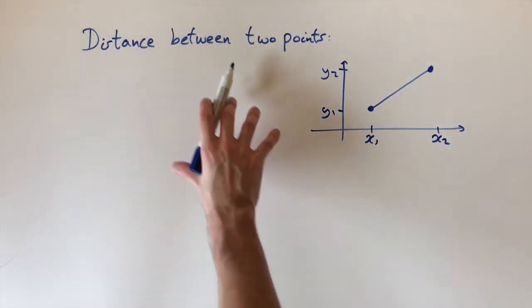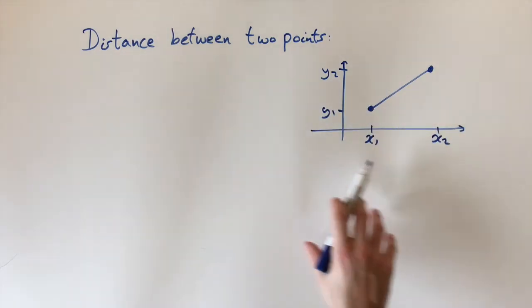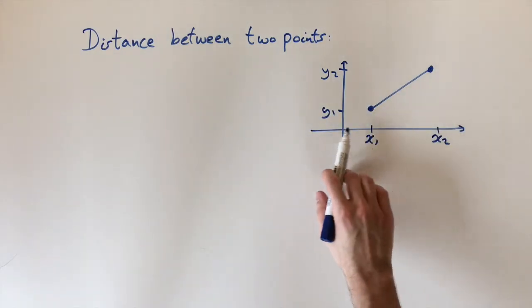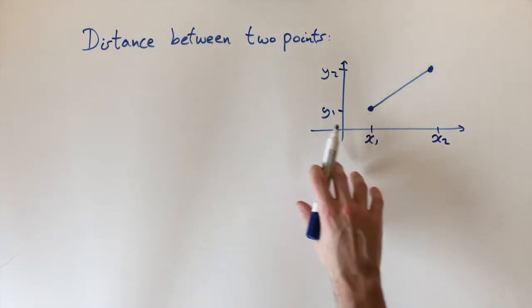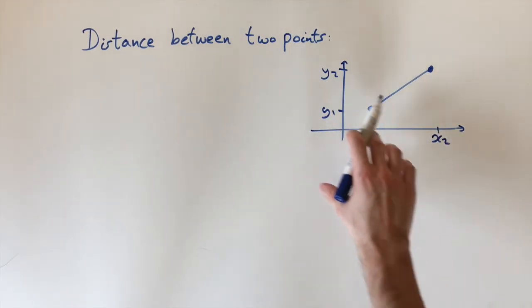Okay, so today we're going to be looking at finding the distance between two points on a line. So think about this general setup. We have two points where the first point has coordinates x1 and y1 and the second point has coordinates x2 and y2.